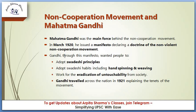Through this manifesto, Gandhi wanted people to adopt Swadeshi principles, adopt Swadeshi habits including hand spinning and weaving, and work for the eradication of untouchability from society. Gandhi traveled across the nation in 1921 explaining the tenets of the movement.